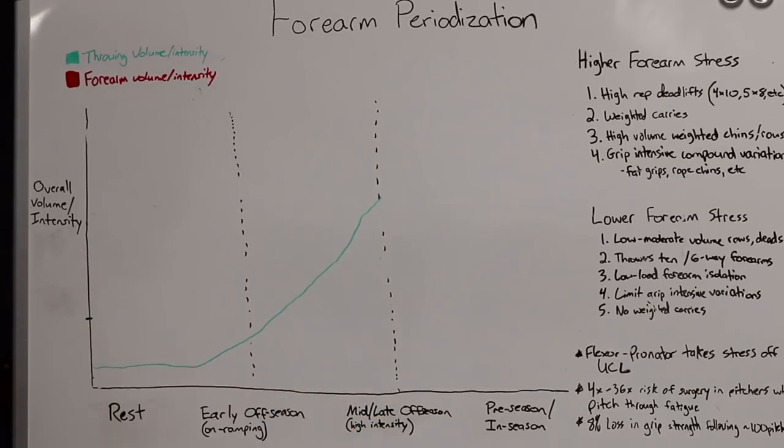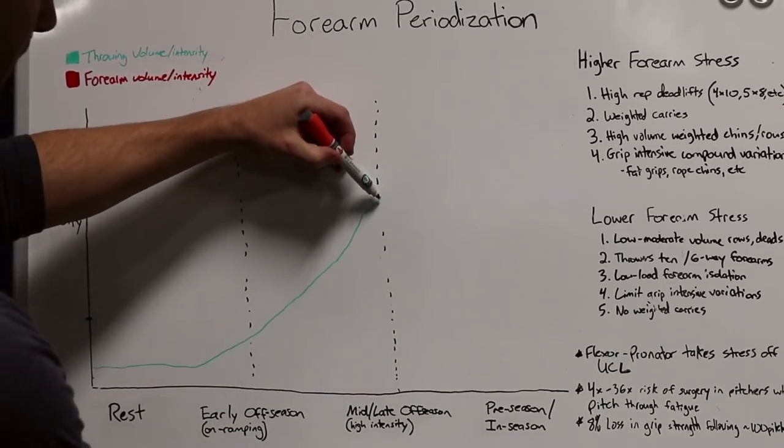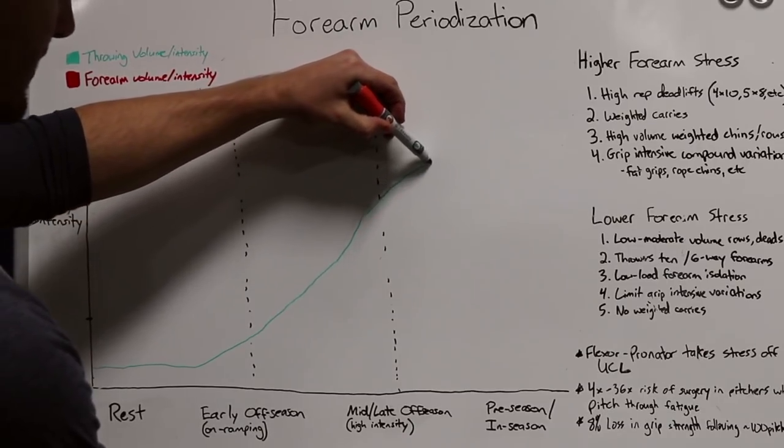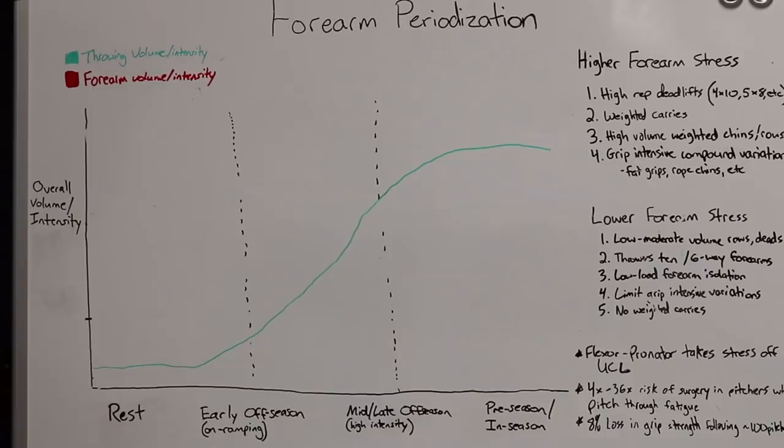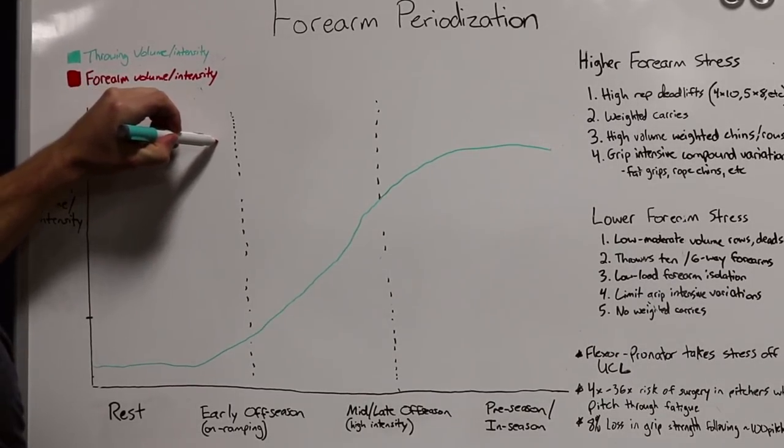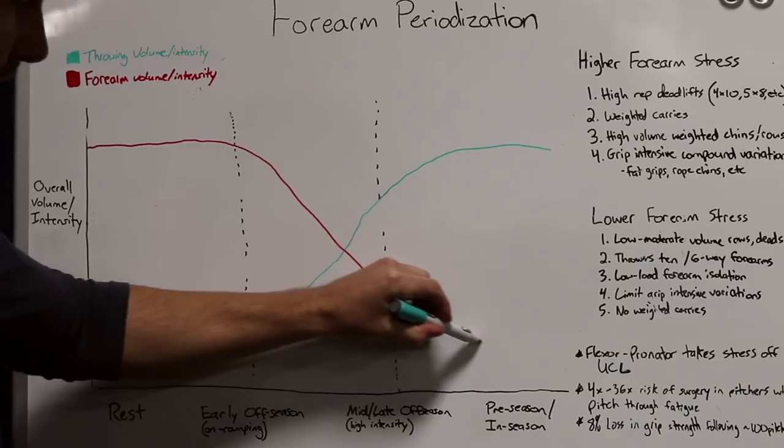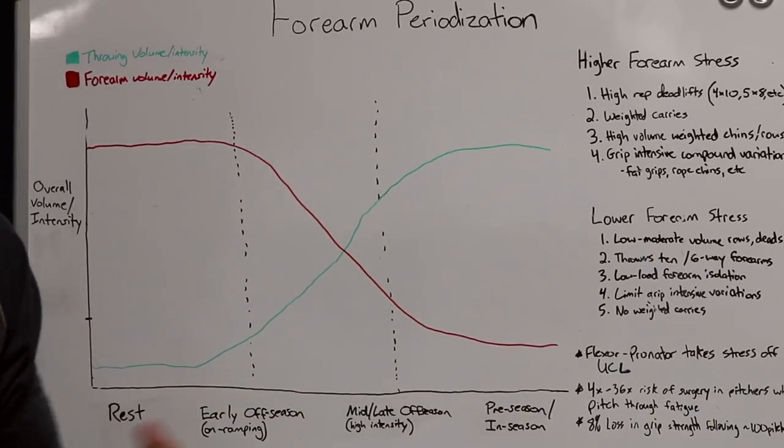Throwing a ton, maybe velocity training, weighted ball training, max effort, long toss, that sort of thing, three to five days a week of some sort of throwing. And that's going to start to peak right as we get into pre-season slash in-season. And that's where it's going to level off. So as throwing volume intensity increases, we want to see kind of this inverse relationship between throwing volume and intensity and your grip training volume intensity. So if you're going to do any high stress grip training, you're going to want to program most of that during your rest periods or during the early off-season. So that might look like higher intensities right here, start to decrease a little bit as we get into the early off-season, start to drop and go kind of into a baseline as we get in-season.